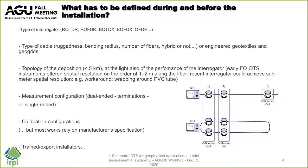Another thing that is really important, as we have seen in the previous talk, is the type of cable. The type of cable one can use is mainly determined by the constraints in the field in terms of ruggedness, bending radius, number of fibers, whether these fibers are multi-mode or single-mode, whether the cable is hybrid or not — we will see more about this later — or you can even go for engineered geotextile or geogrids.